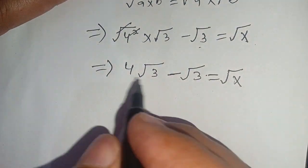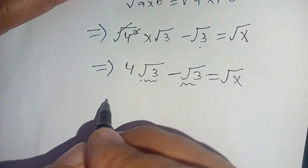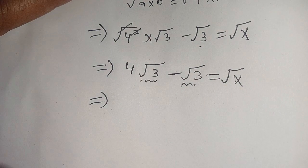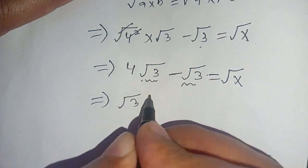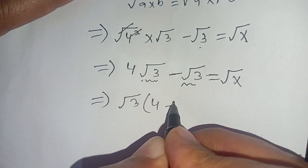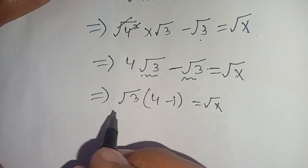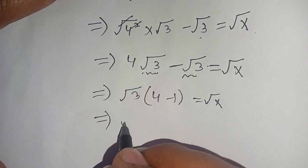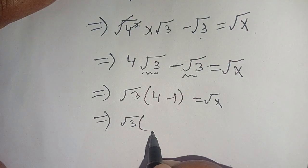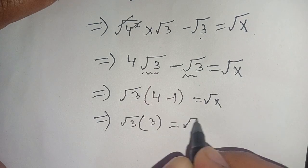Now we can factor out square root of 3 and write it as square root of 3 times 4 minus 1, is equal to square root of x. This gives us square root of 3 times 3, which equals 3 square root of 3, is equal to square root of x.